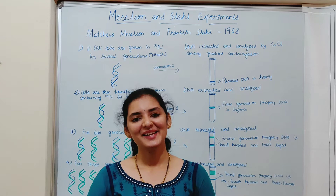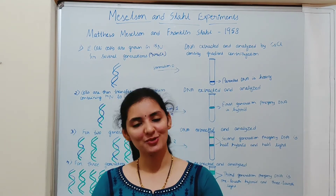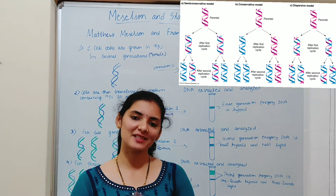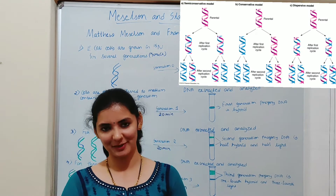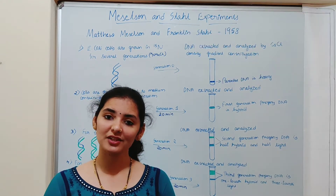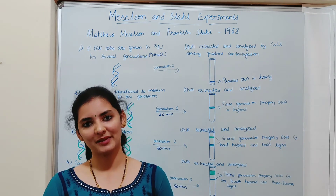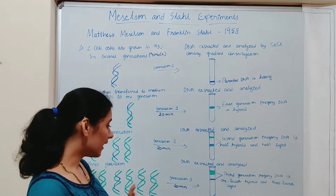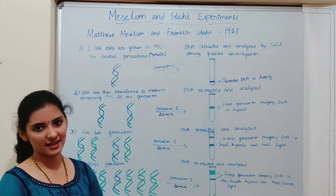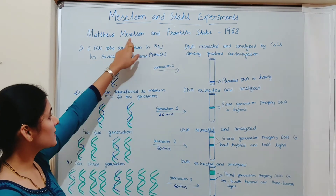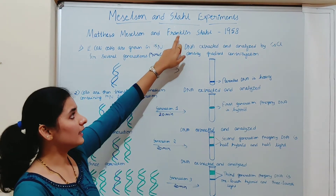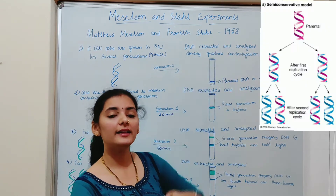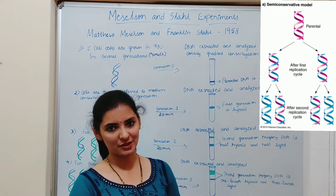Hi friends, welcome back. In the last video I discussed about three modes of DNA replication: conservative, semi-conservative, and dispersive mode of replication. Which is the correct model that explains DNA replication was the question. We never knew the answer until Meselson and Stahl did this experiment in 1958, proving that DNA replicates in a semi-conservative manner.